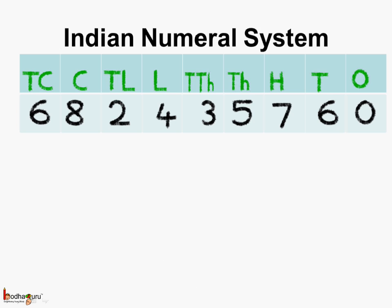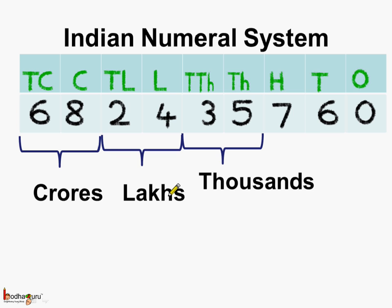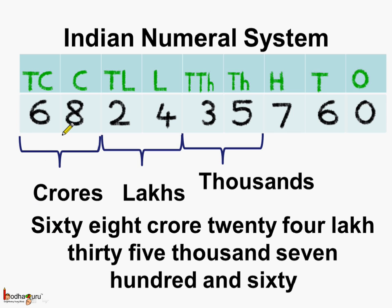If you are confused, remember: we group crores together, lakhs together, and thousands together, followed by hundreds, tens, and ones, reading from the highest value. So this is read as sixty-eight crores, twenty-four lakhs, thirty-five thousand, seven hundred and sixty. It becomes easy to read when we place the number under the correct place value chart.